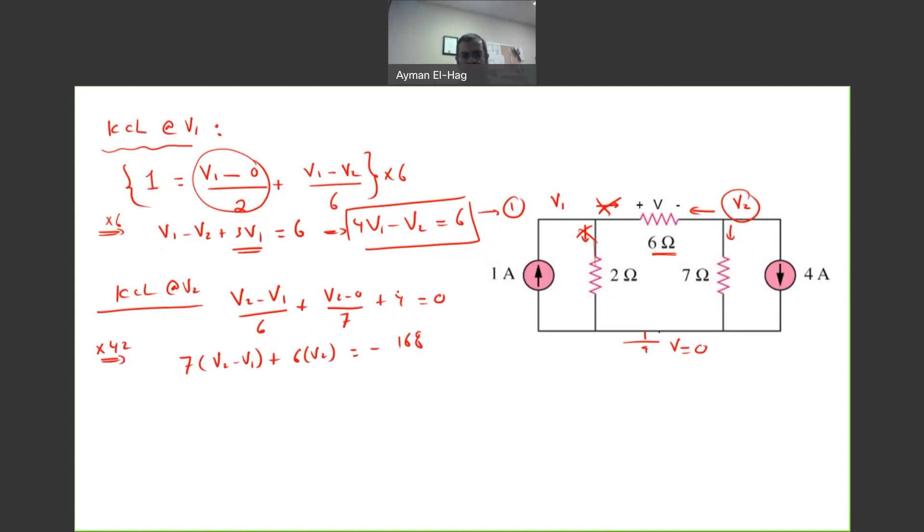So, we'll have here seven times V2 minus V1 plus six times V2 equal to minus 168, which is 42 times this four. So, at terms, we'll have minus seven V1 plus 13 V2 equal to minus 168, and this is my second equation.